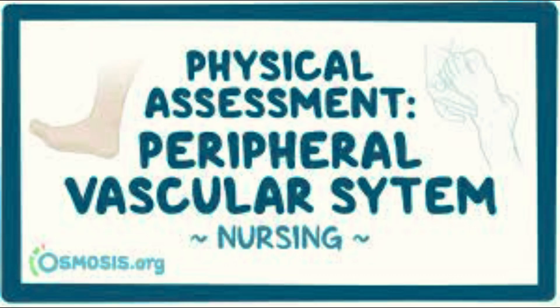6. Vascular assessment. Poor circulation can hinder wound healing in individuals with diabetes. Assessing vascular status through tests such as ankle brachial index (ABI) or Doppler ultrasound can help identify any underlying vascular issues that need to be addressed.